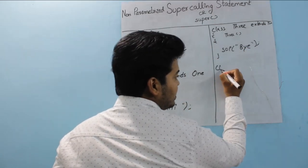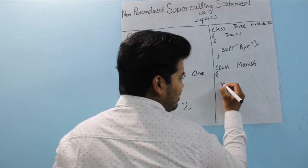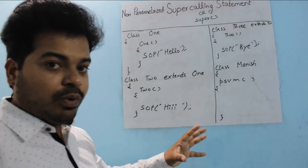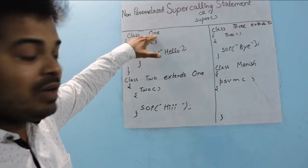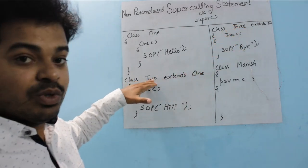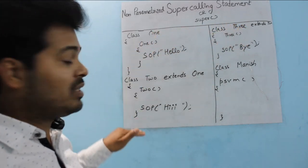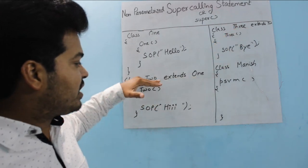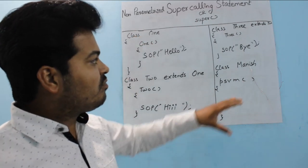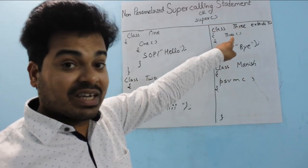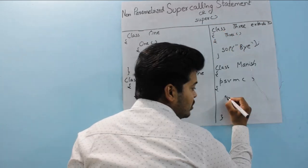You have one more class which is Class3, which inherits Class2 — so 'extends 2'. It has a constructor called 'three' which prints bye. Now you have a main method. Let's say the class name is 'Manish' and inside that class you have a main method: public static void main. Class2 inherits from Class1, and Class3 inherits from Class2.